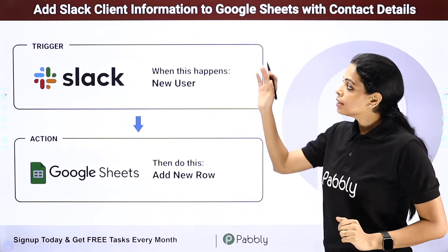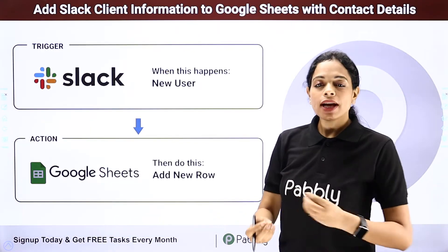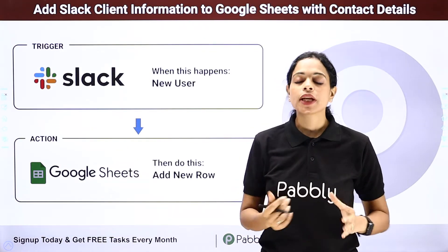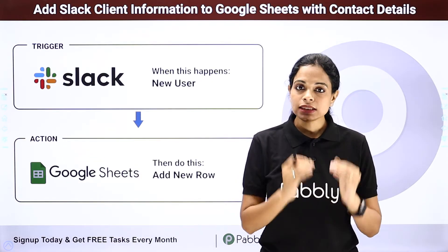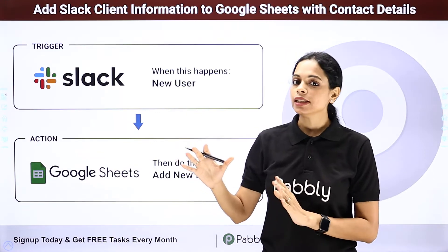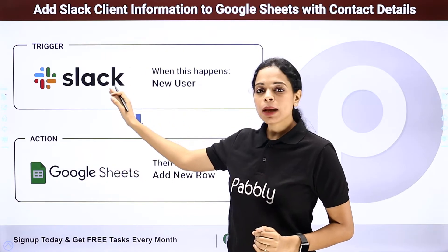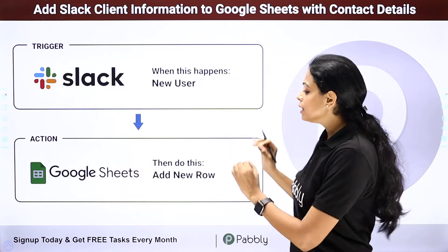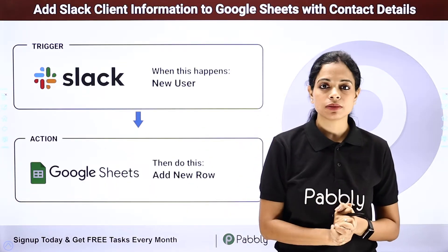Next, we have adding Slack client information to Google Sheets with contact details. You have received messages on Slack — let's say you have received some information about new leads, your team is sending new lead details. Now you want these details to be part of your Google Sheets, so the client information along with all the details should be there. You will have to integrate these two applications. Your trigger application would be Slack, your action application would be Google Sheets, and this can easily be done. Just a one-time setup and you are good to go.